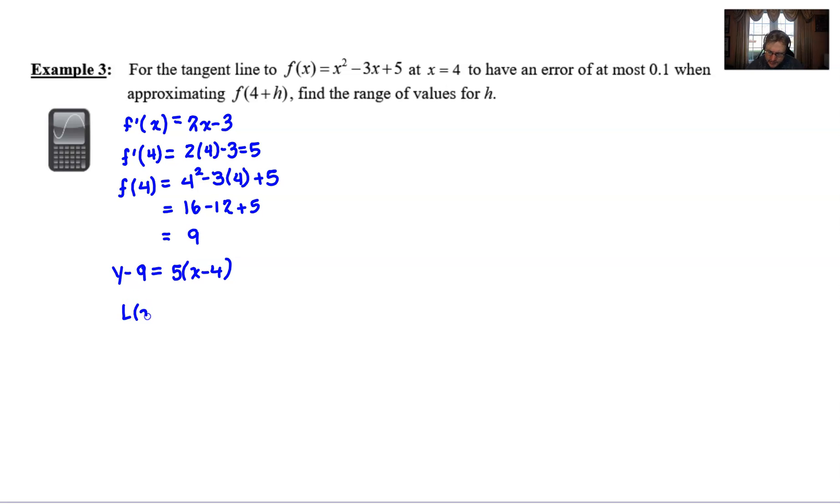So let's write it. Y minus the y value of 9 equals the slope 5 multiplied by x minus the given x value of 4. And in typical fashion, you know what we do. We solve for the y, change its name to L(x). And we find ourselves here.